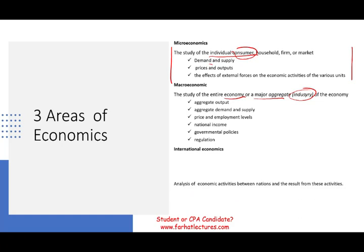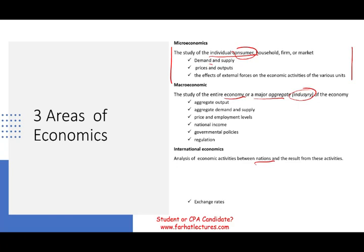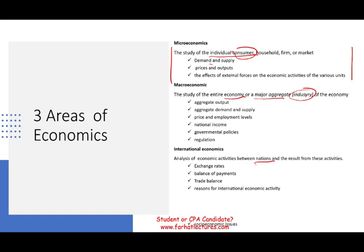International economics deals with activities between countries and nations, and the results of these activities. When you buy in foreign currency, you have an exchange rate — for example, if you want to buy a product from Europe, you pay in euros. There's a price for the euro called the exchange rate. Also covered are balance of payments and trade balances. For example, with China, the balance of trade favors China because China sells us more products than it buys from us. We also cover reasons for international economic activity, socioeconomic and geopolitical issues, international transfer pricing, and globalization.